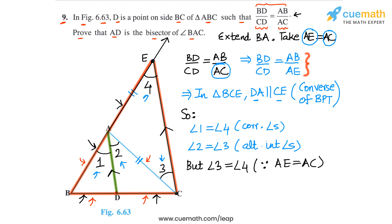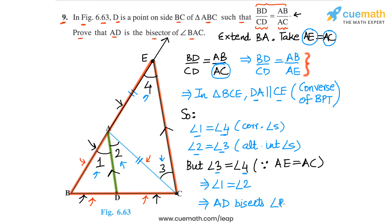So angle 3 equals angle 4 because AE equals AC. Therefore we can conclude that angle 1 equals angle 2, since angle 2 equals angle 3 and angle 4 equals angle 1 and angle 3 equals angle 4. This proves that AD bisects angle BAC — AD is the angle bisector of angle BAC.